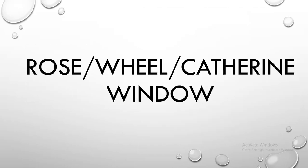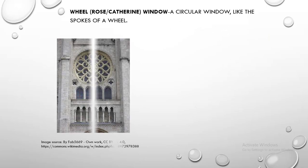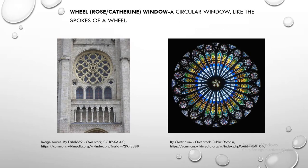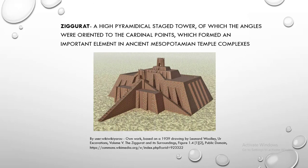Rose, Wheel or Catherine Window. A wheel or rose or Catherine window is a circular window like the spokes of a wheel. Ziggurat. Ziggurat is a high pyramidal staged tower, of which the angles were oriented to the cardinal points, which formed an important element in ancient Mesopotamian temple complexes.